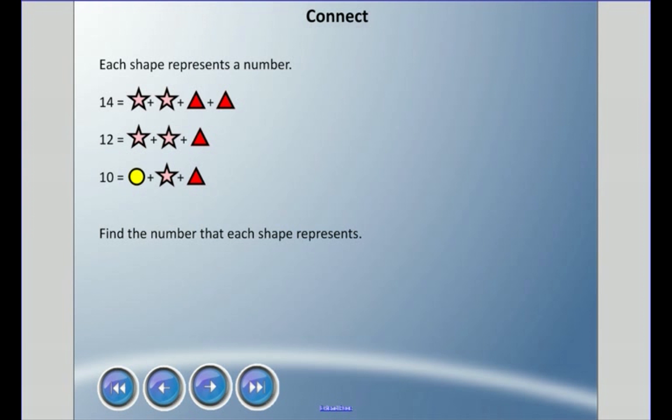In this situation we have each shape representing a number again. I have stars, triangles, and circles, and we're going to find the number that each shape represents. What I noticed right away is that I have two stars in each of these but only one star here. That's really interesting to me, so I gotta do some guessing and checking.